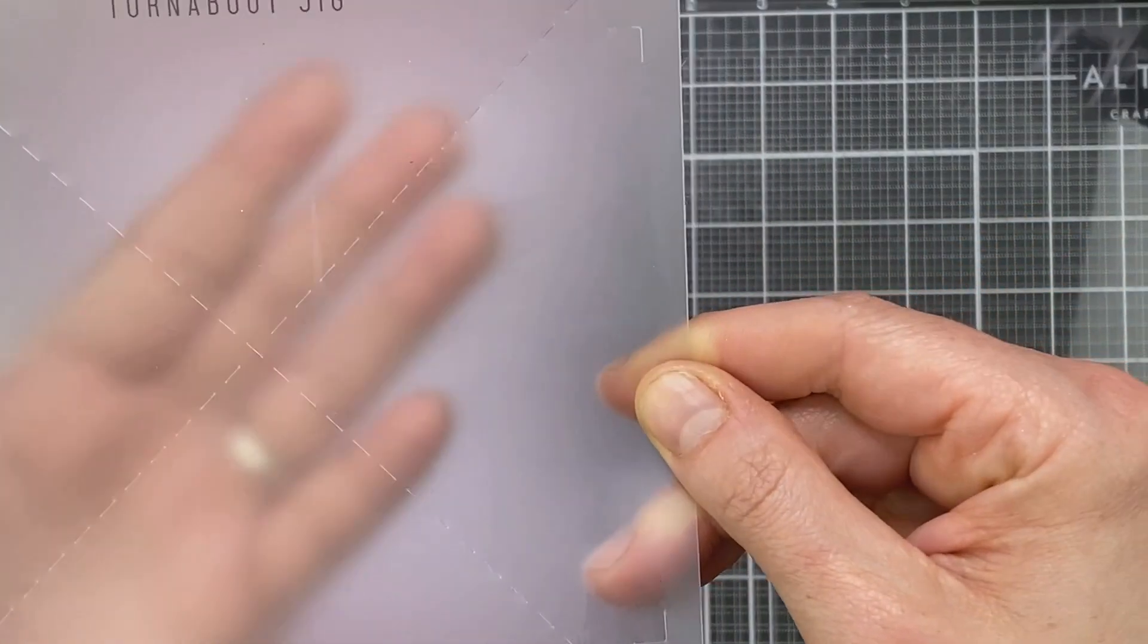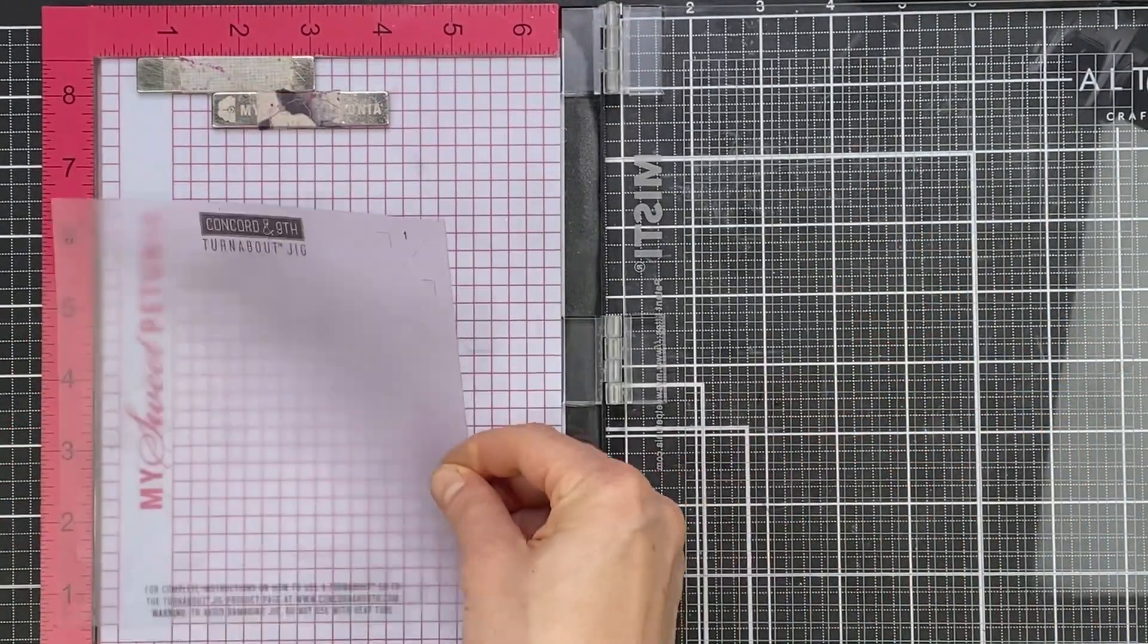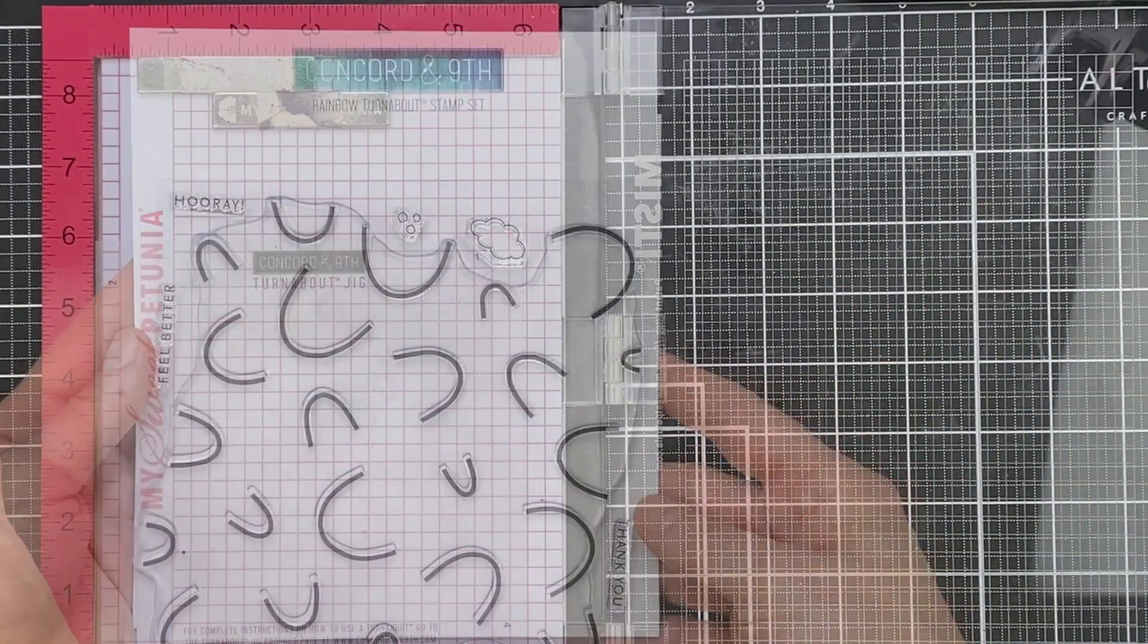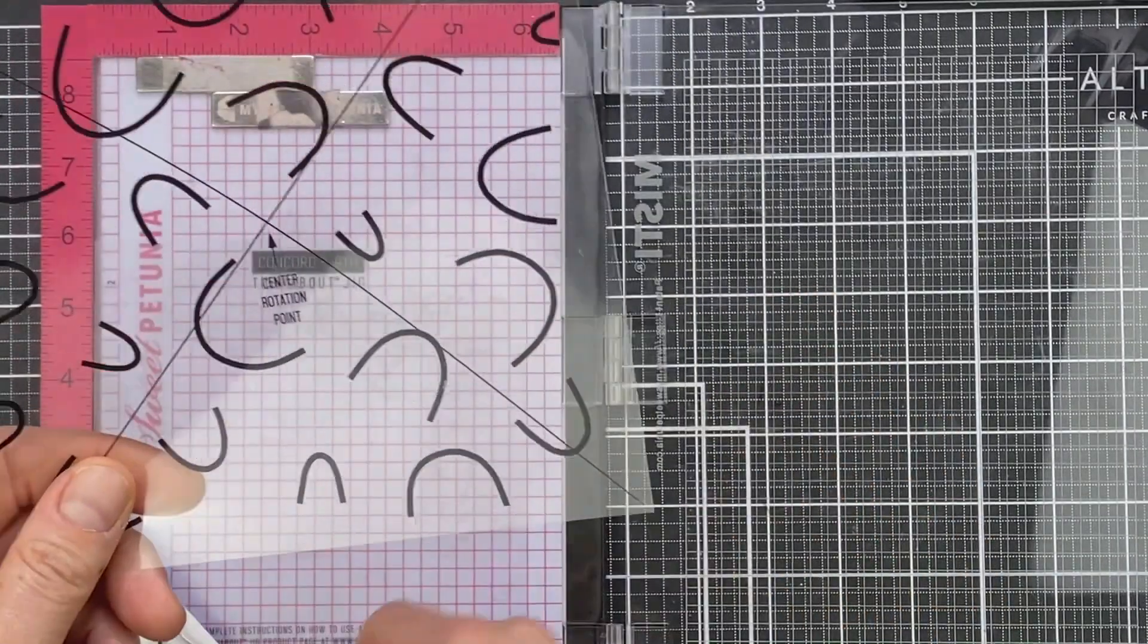Heat embossing a turnabout stamp is not actually that easy, and I've got some tips for you that I learned the second time round. So what you're going to see here is my second attempt, and hopefully you're going to be able to do this first time.